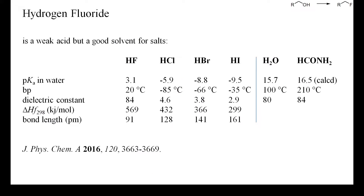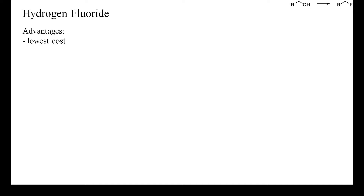Because of the short, strong bond between protons and fluoride, hydrogen fluoride is a weak acid, only slightly more acidic than acetic acid. Its high dielectric constant, however, facilitates the formation of carbocations from alcohols or olefins. Hydrogen fluoride has the same dielectric constant as formamide and is therefore a good solvent for ionic compounds. The main advantages of hydrogen fluoride as a deoxyfluorinating reagent are its low price and the fact that the only by-product of the reaction is water.